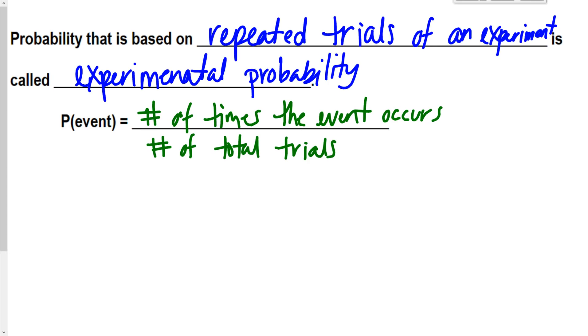So it is pretty key here to remember. It's how many times something does occur over the total times you tried that experiment.